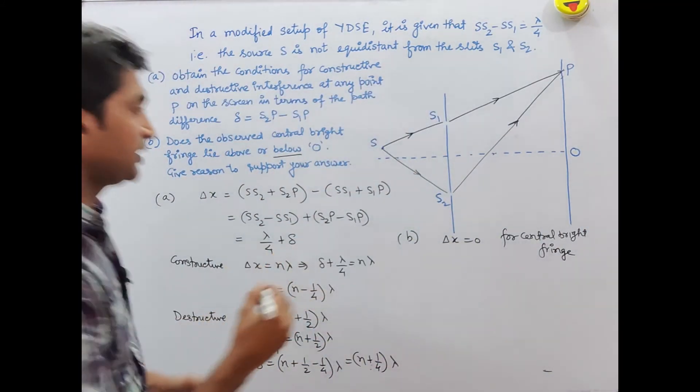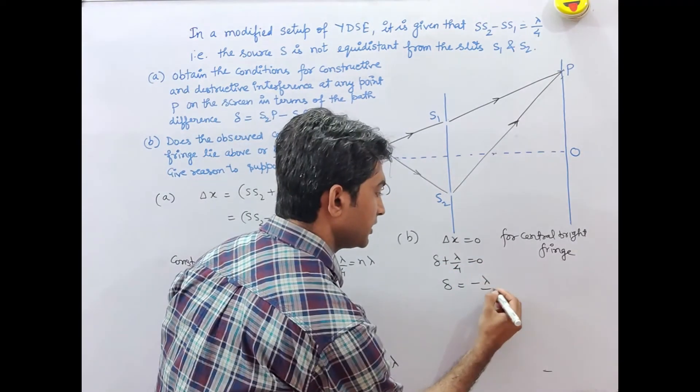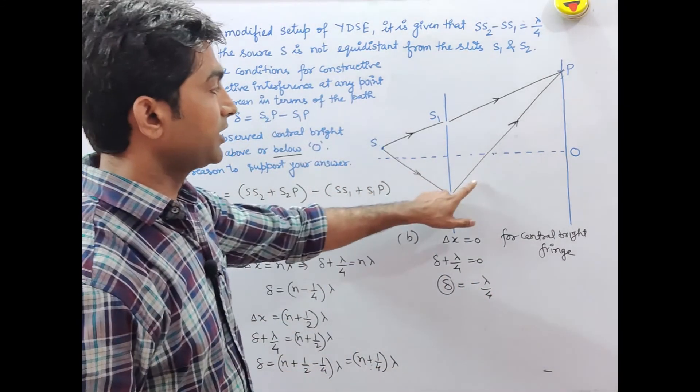So delta X is delta plus lambda by 4. Therefore, delta equals minus lambda by 4. Delta is coming out negative.